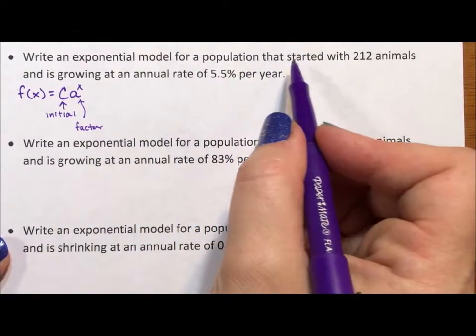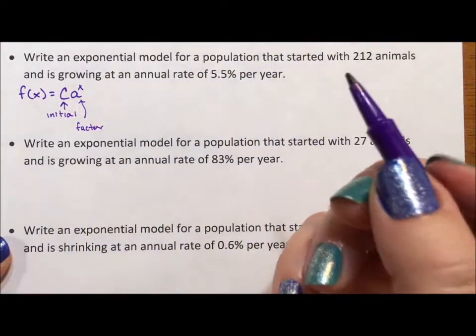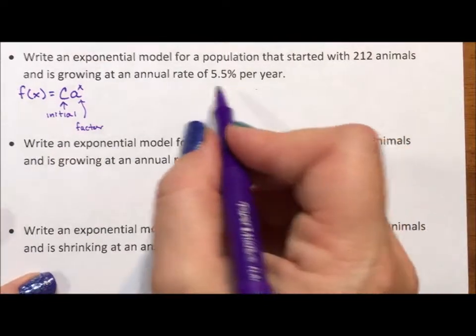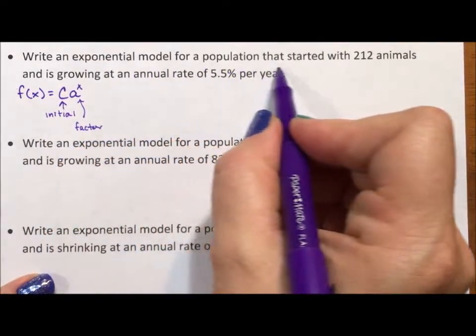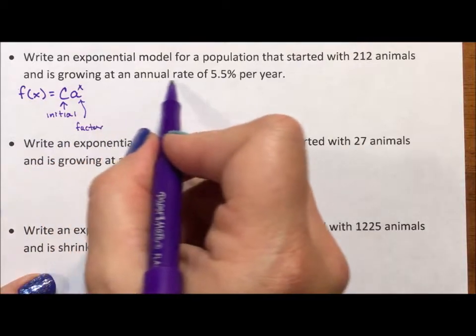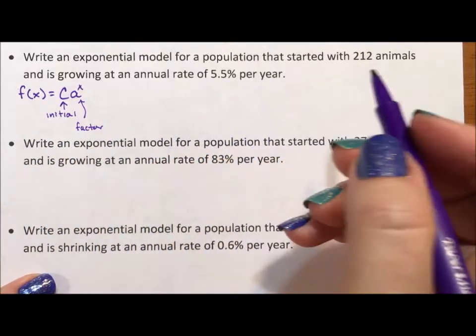Now because we're doing population instead of f(x), I'm gonna do p(t), population over time. So let's write an exponential model for the population that started with 212 animals and is growing at an annual rate of 5.5 percent per year.